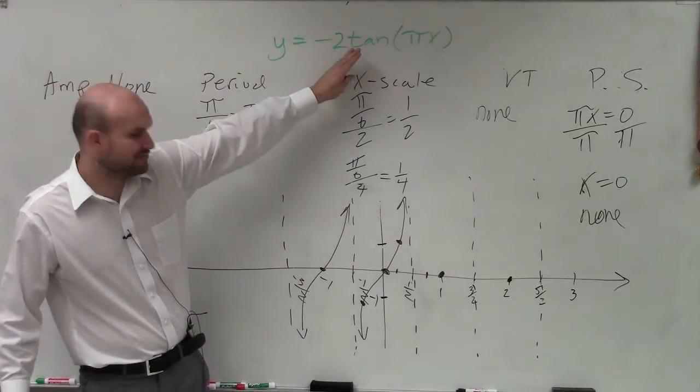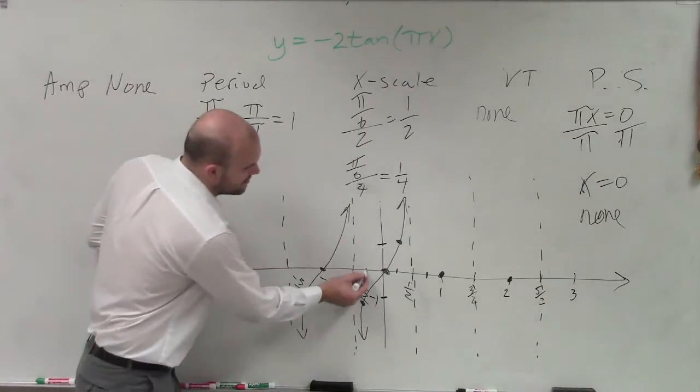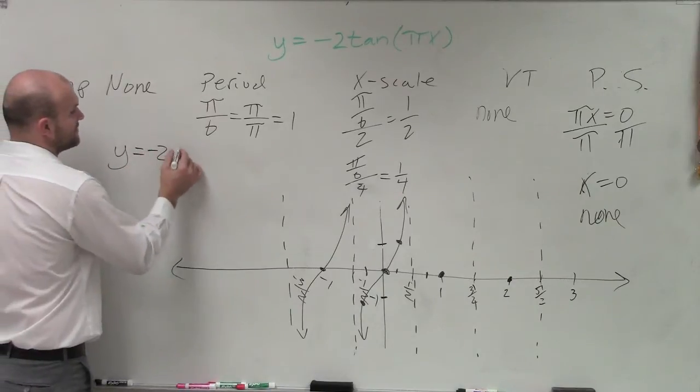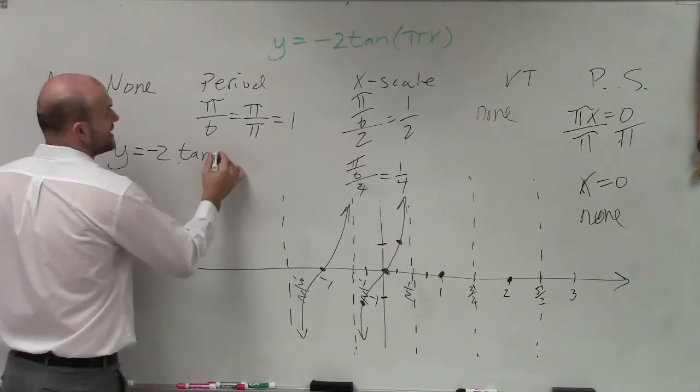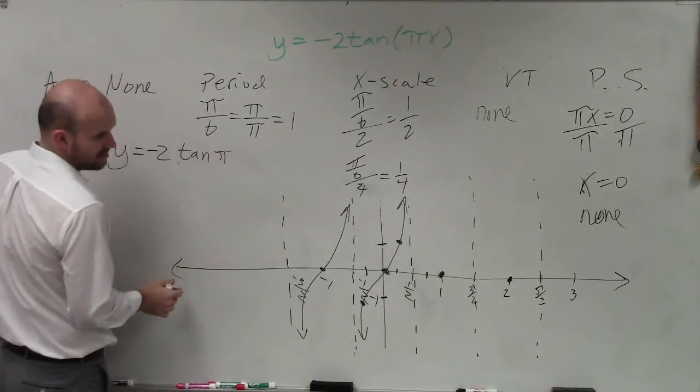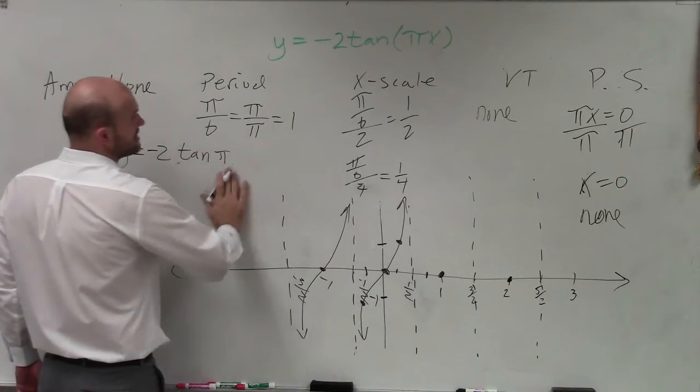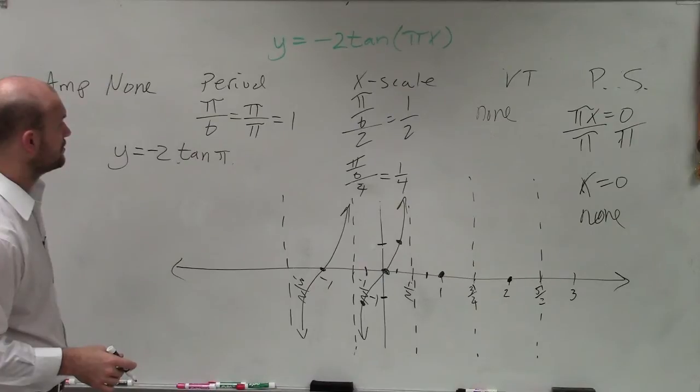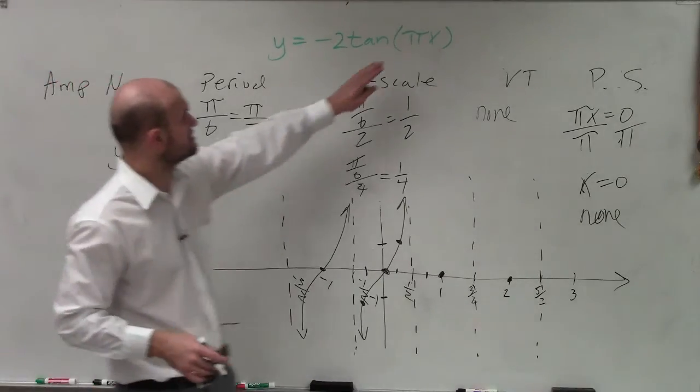But now, how is this negative 2 going to affect this? Well, what I can do is for each one of my quarter points, I can evaluate this. So I can say y equals negative 2 times tangent of pi times pi over 4.